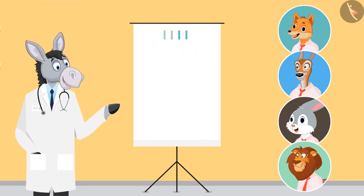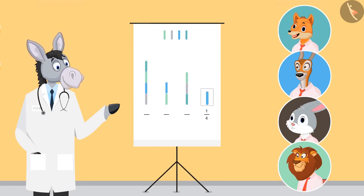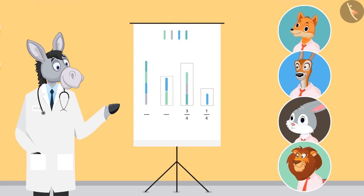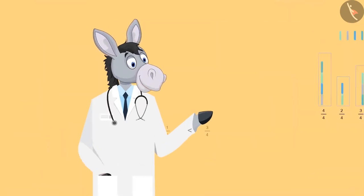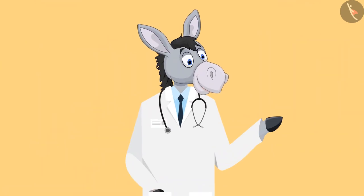Absolutely right. Now look at these four same-sized wood logs. Can you guess their different numbers in relation to these four woods? This is one-by-four. This is three-by-four. This is two-by-four, also known as half. And is this four-by-four? Yes, this means full. Now you must have understood that one-by-four is one-fourth, and three-by-four is three-fourth.